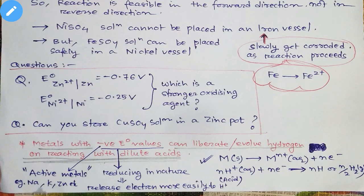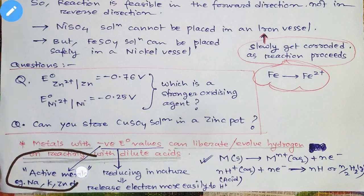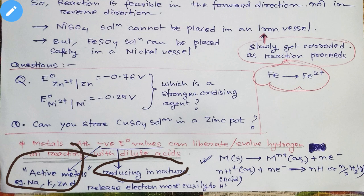One more thing: the metals which have negative E⁰ values are placed at the bottom of the electrochemical series — I have already told you this in the previous video on the electrochemical series. Those metals are known as active metals — like sodium, potassium, zinc, and others. They are reducing in nature and can release electrons more easily.